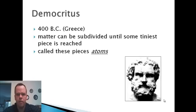The original theory of the atom comes from a Greek philosopher by the name of Democritus. Democritus was from around 400 BC in Greece. He is the first one that came up with the idea that matter could be subdivided until it reached some tiniest piece. That tiniest piece will eventually be called the atom. So Democritus originally comes up with the idea that matter could be broken down into some tiniest piece of matter known as the atom.